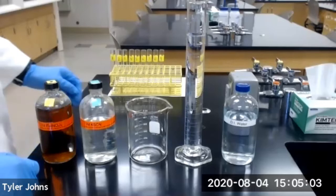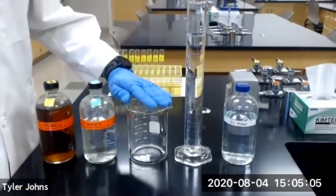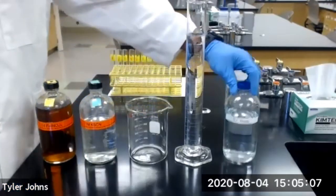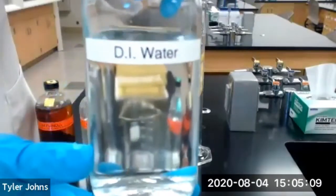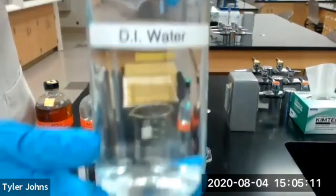We're going to start by making our stock solution in a 600 milliliter beaker. We'll first add 250 milliliters of deionized water.